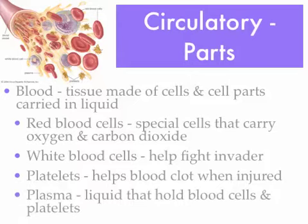The final part of blood is something called plasma. Plasma is the yellowish liquid part visible in the image to the upper left. Plasma is the liquid that holds blood cells and platelets. That covers blood broken down into its parts.